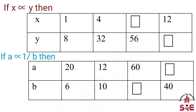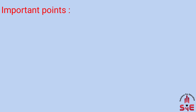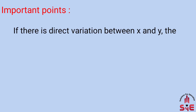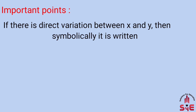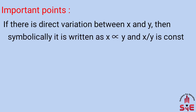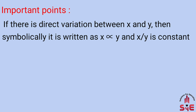Direct variation and inverse variation — properties to use to complete the table. If direct variation, use the property that the ratio x upon y is constant. If there is direct variation between x and y, then symbolically it is written as x varies y, and x upon y is constant.